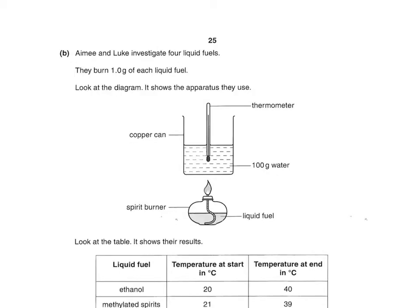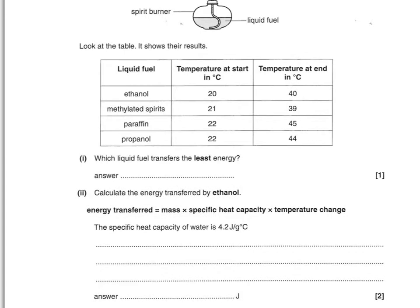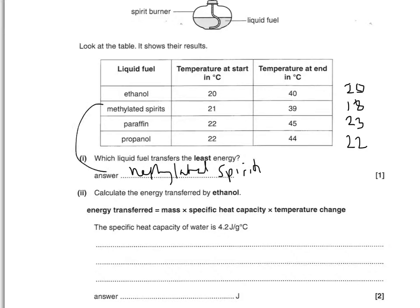Amy and Luke investigate four liquid fuels, burning one gram of each. Which liquid fuel transfers the least energy? Look at the temperature differences: fuel 1 is 20°C, fuel 2 is 18°C (39 minus 21), fuel 3 is 23°C (45 minus 22), and fuel 4 is 22°C. The answer is methylated spirits, because it has the lowest temperature change.